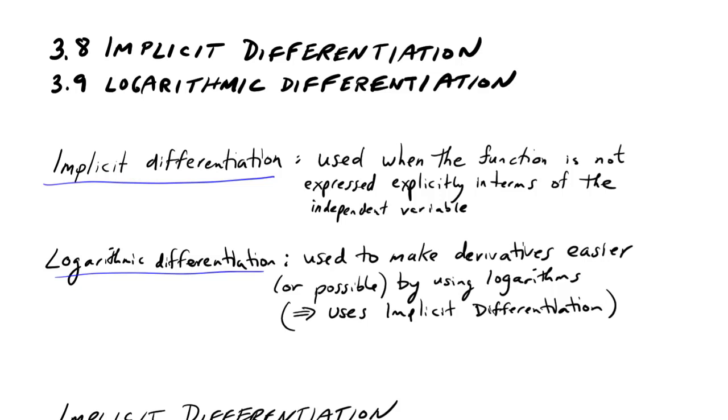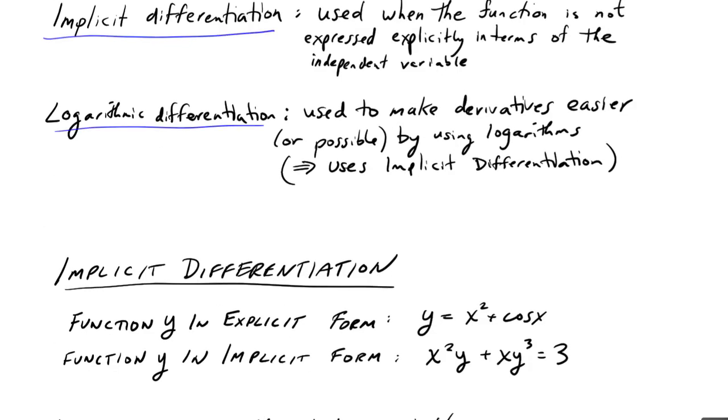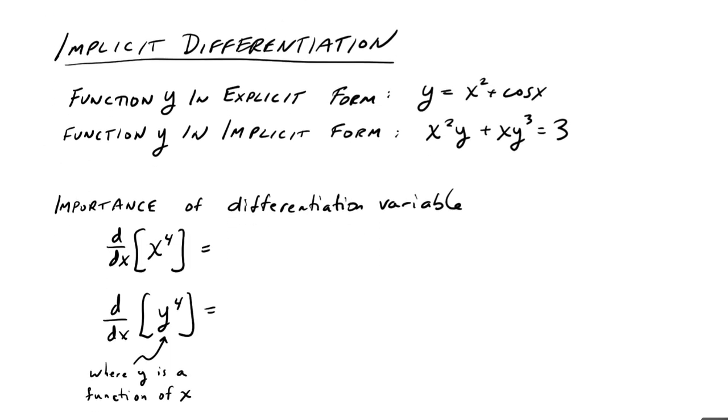We're going to look at implicit differentiation first. What does it mean for a function to be in explicit or implicit form? We're really talking about the function y as a function of x.